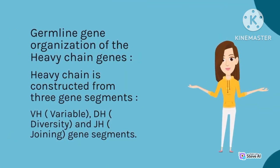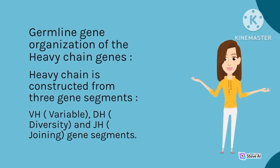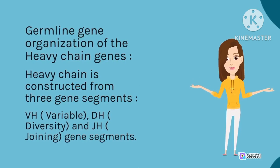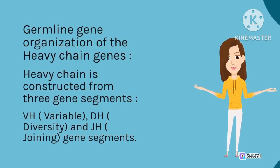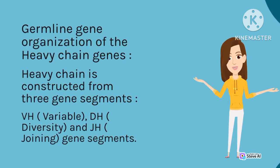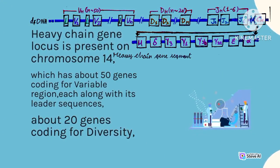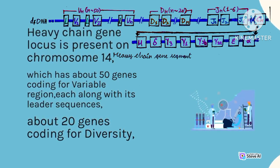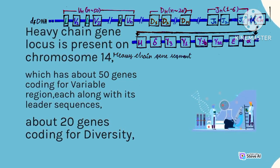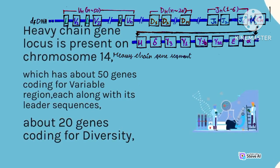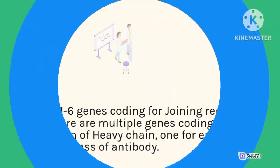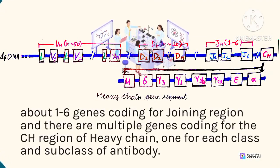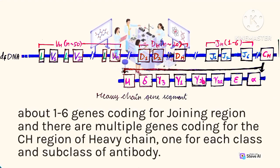Germline gene organization of the heavy-chain genes: The heavy chain is constructed from three gene segments — VH (variable), DH (diversity), and JH (joining). The heavy-chain gene locus is present on chromosome 14, which has about 50 genes coding for the variable region each along with its leader sequences, about 20 genes coding for diversity, about 1 to 6 genes coding for the joining region, and multiple genes coding for the CH region of the heavy chain — one for each class and subclass of antibody.